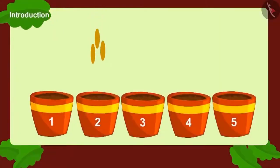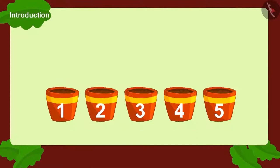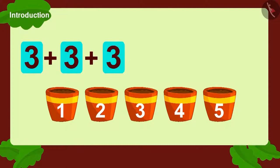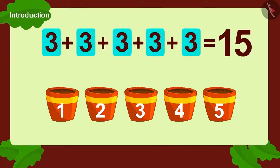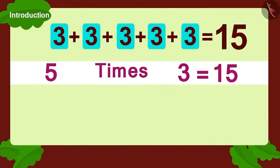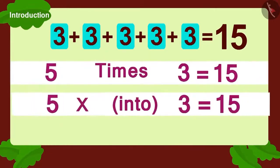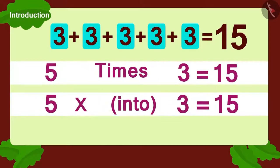Children, if Babban had planted three seeds each in five pots, then can you write this using multiplication? Yes. We can write it as three plus three, plus three, plus three, and finally one more three, equals fifteen. Or five multiplied by three. We can write it like this.